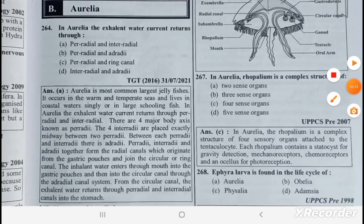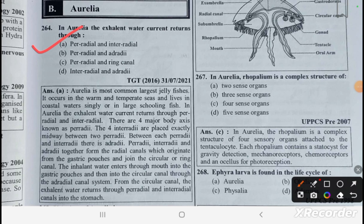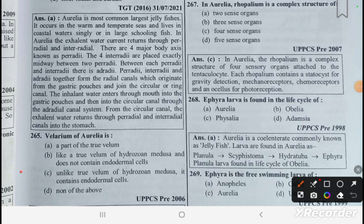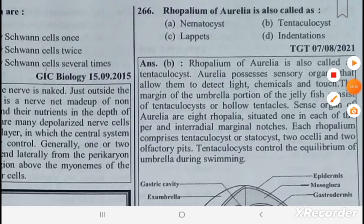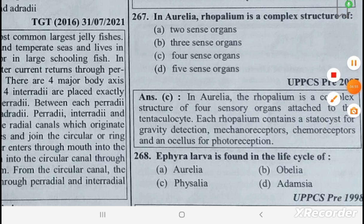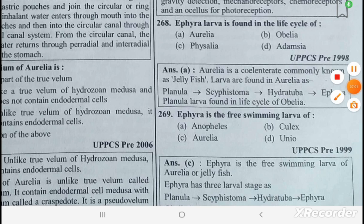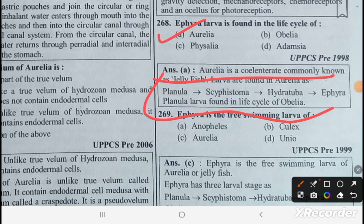In Aurelia, the excurrent water current returns through the paradial and interradial canals. The velarium of Aurelia, unlike the true velum of hydrozoan medusa, contains endodermal cells. The rhopalium of Aurelia is also called the tentaculocyst and is a complex structure with four sense organs. The ephyra larva is found in Aurelia, passing through stages: ephyrula, scyphistoma, and hydratuba. The total number of radial canals in Aurelia is sixteen.